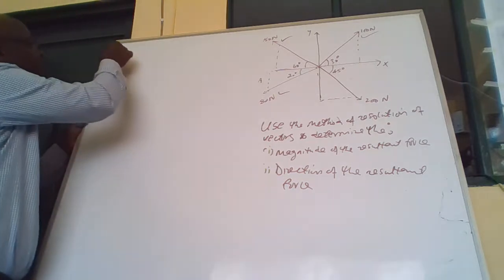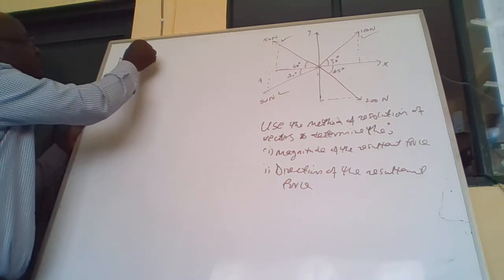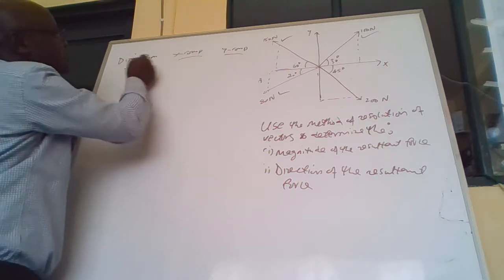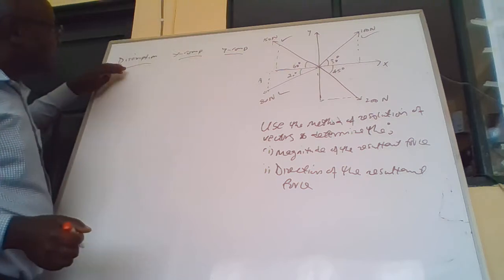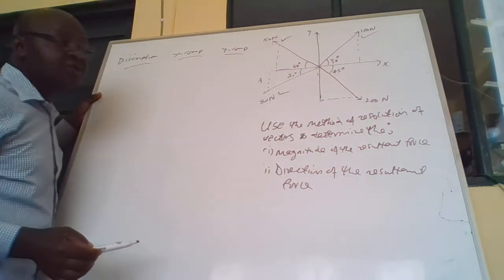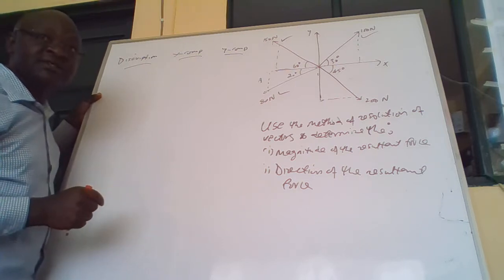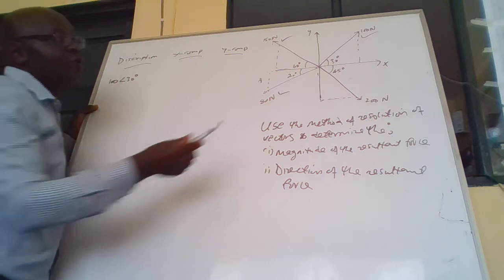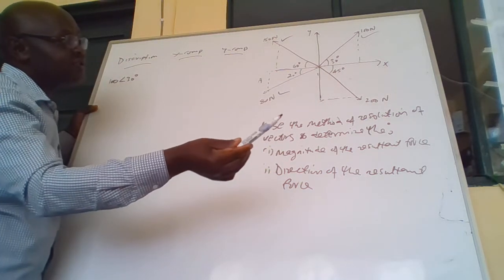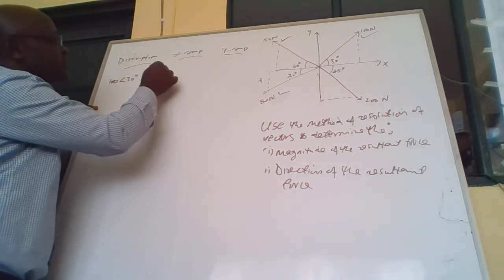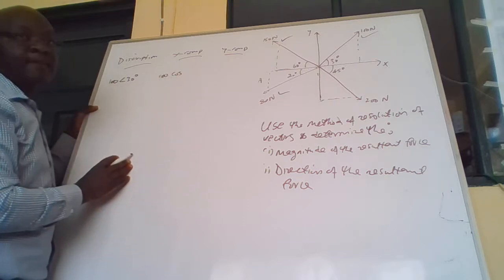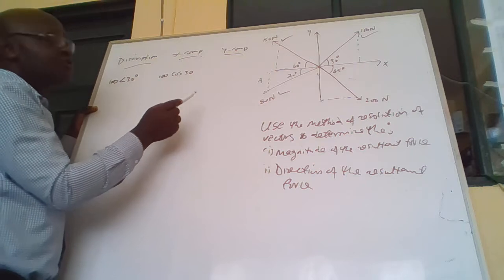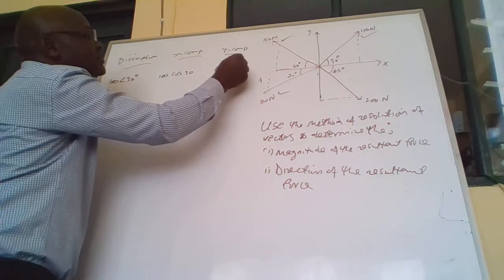Now to tackle this we set up a table with X component and Y component columns. Starting with the force of 100 Newtons at 30 degrees: the X component is 100 cos 30 degrees, and the Y component is 100 sine 30 degrees.